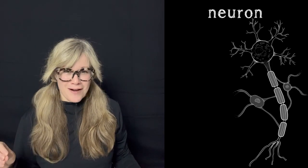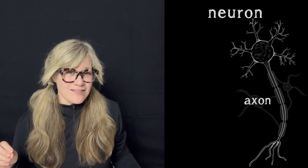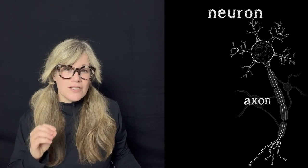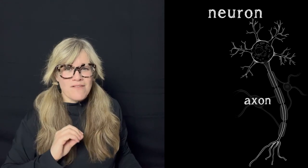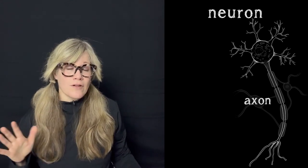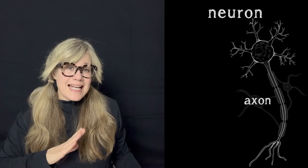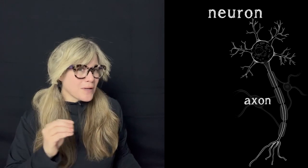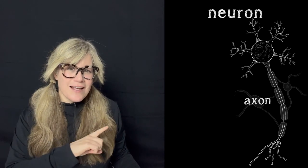Moving on to another side of the soma, where there is a protruding thin trunk. This trunk is called the axon, also called a nerve fiber, that projects to other parts of the brain and body at varying lengths depending on where in the nervous system it is. It has a very important role in passing along or transmitting a signal to the next neuron.